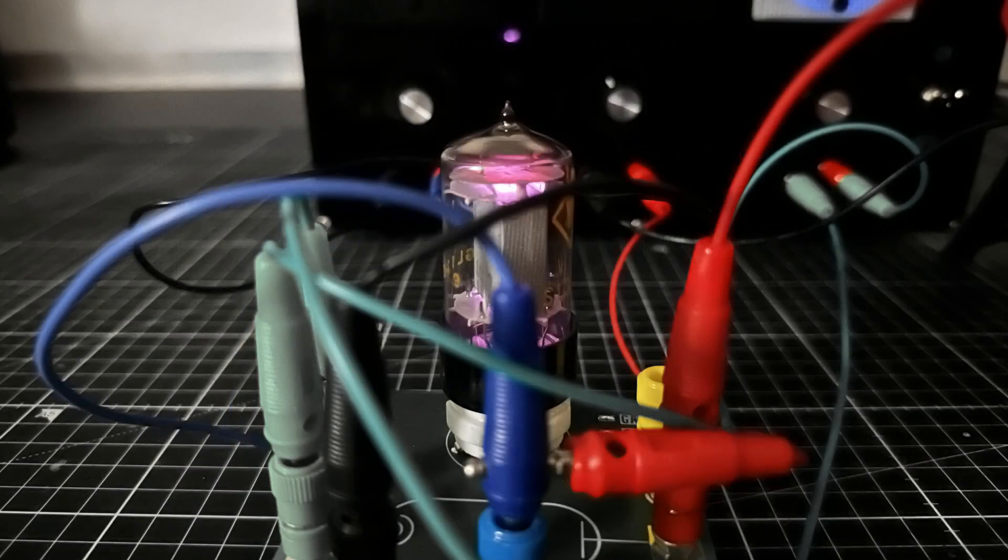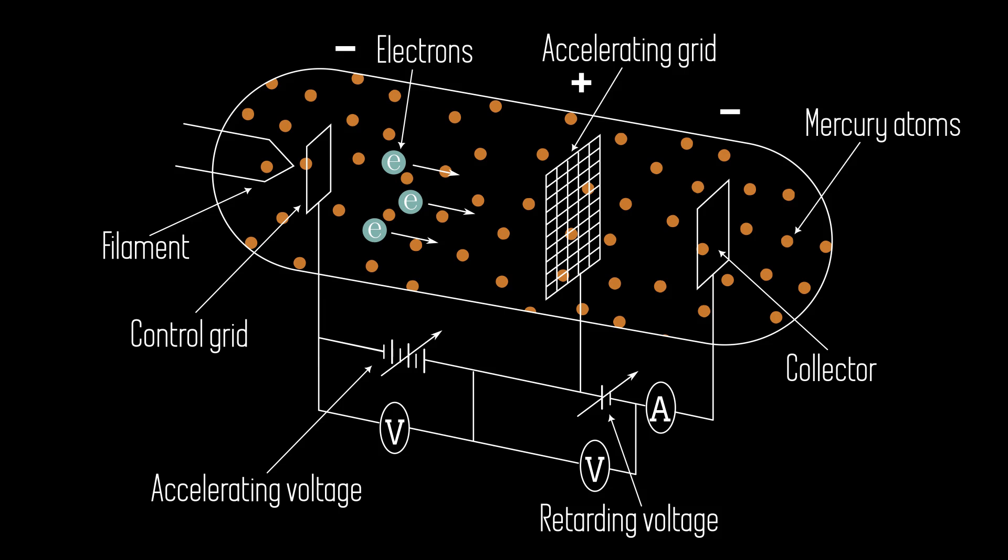As in the Frank-Hertz experiment with neon gas, glowing regions can also be seen with argon, although the design of the tube prevents a direct view. To understand what is happening here, let's look at the original Frank-Hertz experiment.